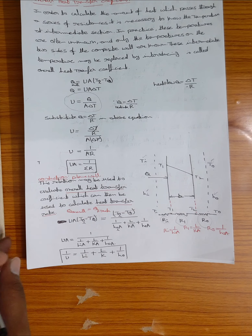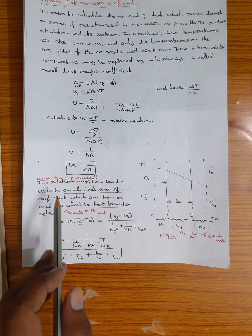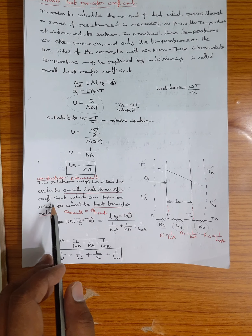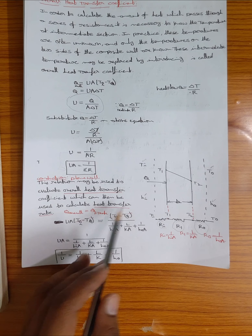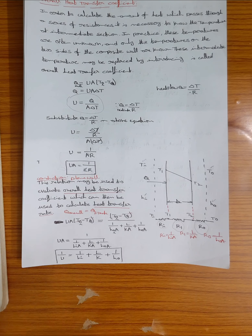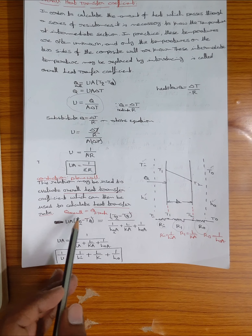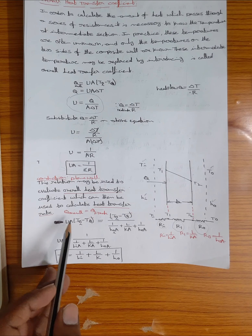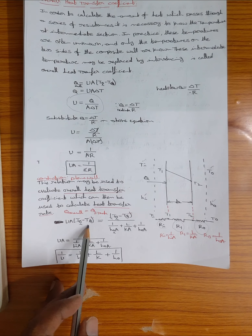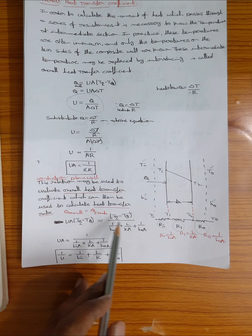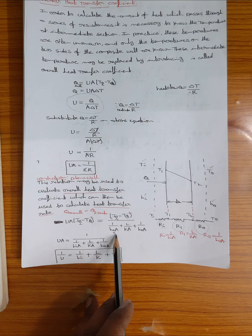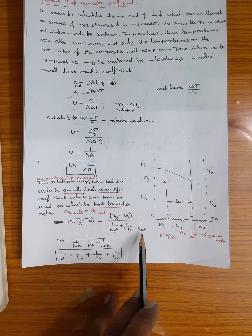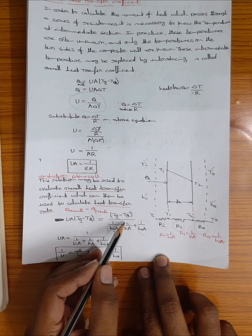Using these formulas from data book page 43 for plane wall conduction and convection, we compare Q_overall = UA(TA − T0) with Q = ΔT / R. The total resistance R = Ri + R1 + R0 = 1/(Hi × A) + L/(Ka) + 1/(H0 × A), where the first and last terms are convection and the middle is conduction.